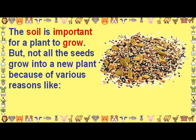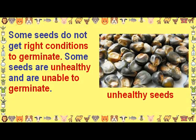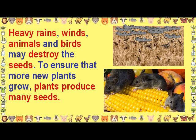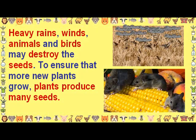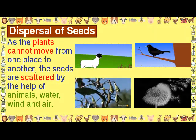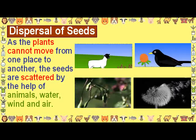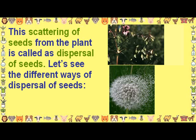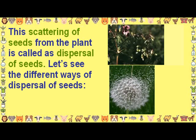Not all seeds grow into a new plant because of various reasons. Some seeds do not get the right conditions to germinate. Some seeds are unhealthy and unable to germinate. Heavy rains, winds, animals and birds may destroy the seeds. To ensure that more new plants grow, plants produce many seeds. The scattering of seeds from plants is called dispersal of seeds. As plants cannot move from one place to another, the seeds are scattered with the help of animals, water, wind and air.